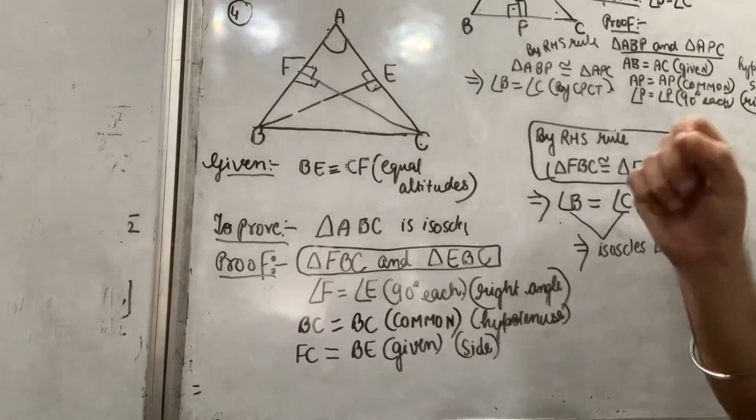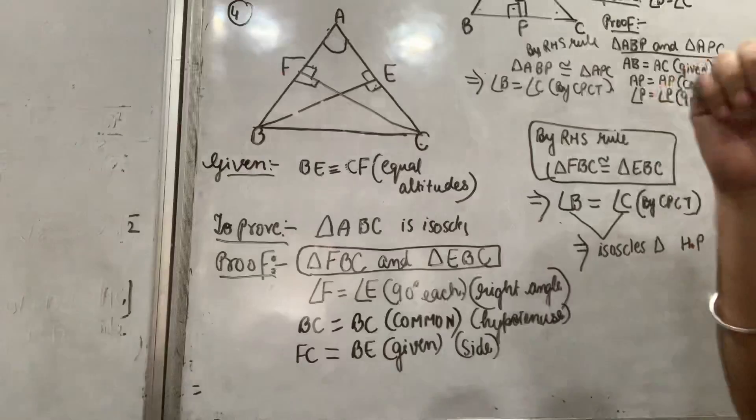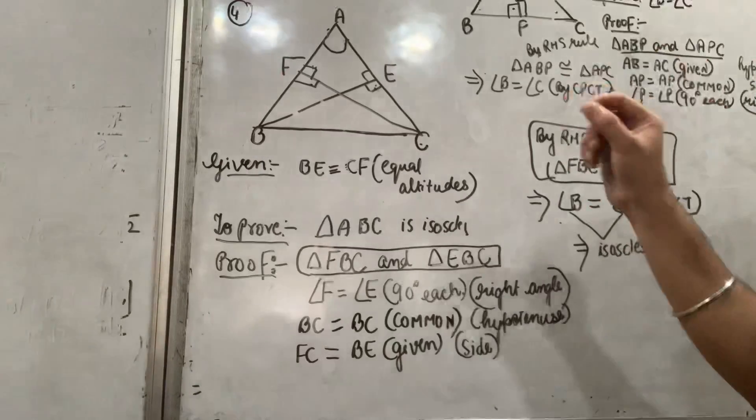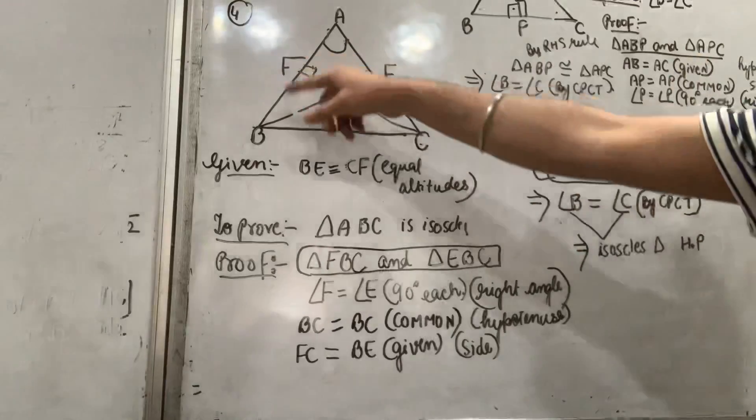In a triangle A, B, C, you have given this diagram. In triangle ABC, BE and CF are two equal altitudes.